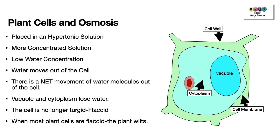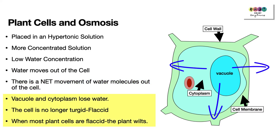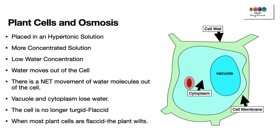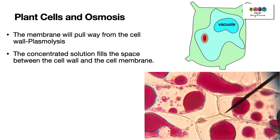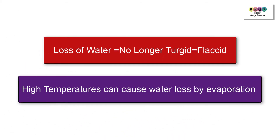When plants are placed in a hypertonic solution — more concentrated, low water concentration — water moves out of the cell. The vacuole and cytoplasm lose water, the cell is no longer turgid but flaccid, and when most cells are flaccid the plant will wilt. In a more concentrated hypertonic solution, the plant cell loses so much water that the cell membrane pulls away from the cell wall — this is known as plasmolysis. The gap is filled by the concentrated solution, but this can be reversed by surrounding the cells in a hypotonic solution such as distilled water.